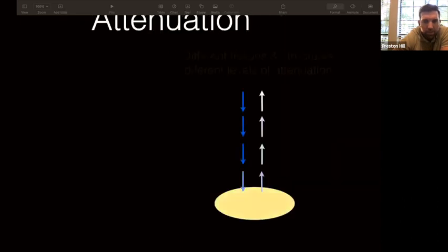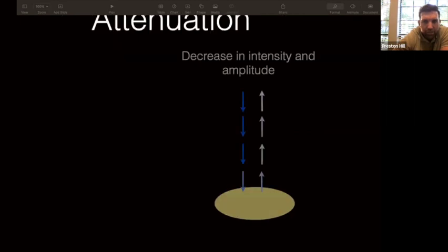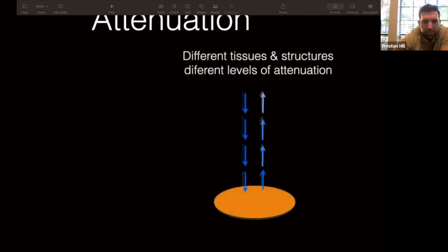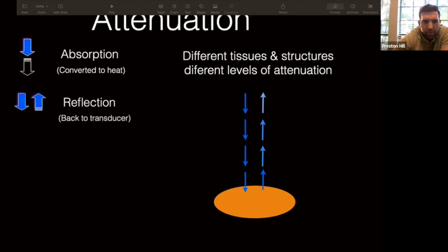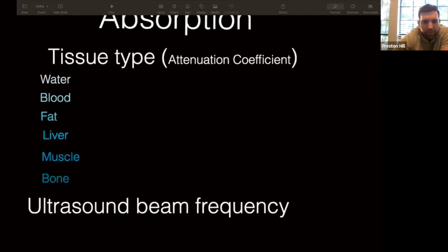The physics of attenuation: the machine knows when an ultrasound wave comes down, hits a structure, and returns. Depending on whether the wave is absorbed — nothing returns — reflected back to the probe, refracted in a different direction, or scattered in all directions, the machine builds the image. Tissues range from water, blood, and fat at lower density all the way to bone at higher density, and higher-density structures will be more hyperechoic.